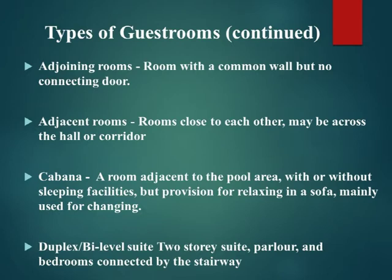Adjoining rooms: a room with a common wall but no connecting door. Adjacent rooms: rooms close to each other, may be across the hall or corridor. Cabana: a room adjacent to the pool area, with or without sleeping facilities, but provision for relaxing in a sofa, mainly used for changing. Duplex, bi-level suite, two-story suite: parlor and bedrooms connected by a stairway.